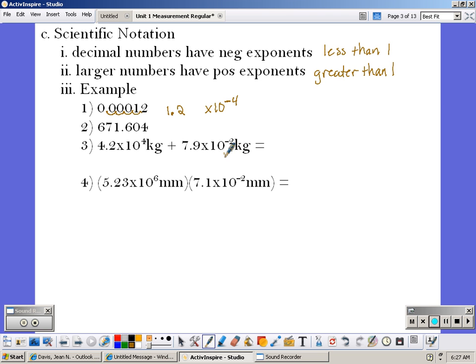In number two, this number is greater than one, so I know that my exponent is going to be positive. The first non-zero digit is a six. So in order to get my decimal behind the six, I have to move it one, two times. So it's 6.7 times ten to the second.